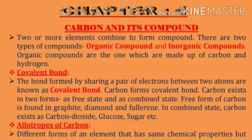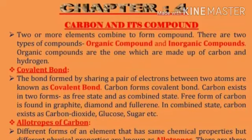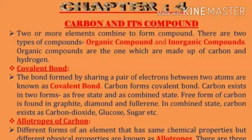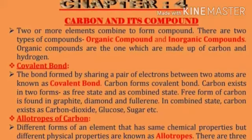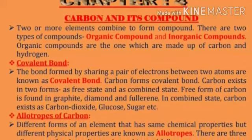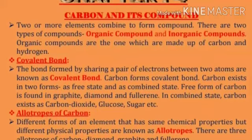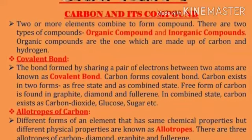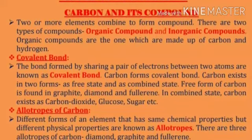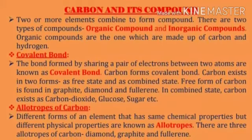Dear students, the symbol of carbon is C, its atomic number is 6, and atomic mass is 12. It is present in the periodic table in Group 14.